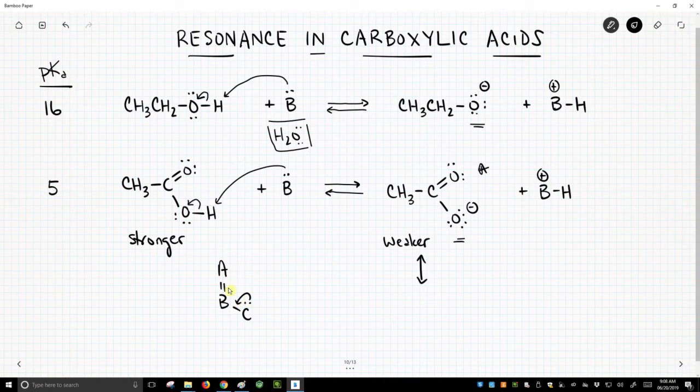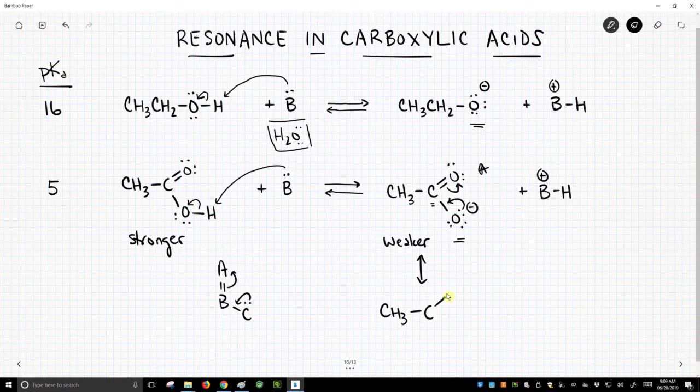This is what we drew before, and here's what we'll draw here. We'll take one of those lone pairs, make a new CO bond, and that will break that particular CO bond because this particular carbon already has a full octet. Make a new bond, and we've got to break an old one, and that gives rise to this structure if you follow the arrows, and we'll have a negative charge, and that gives us this structure.